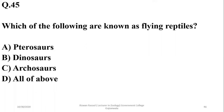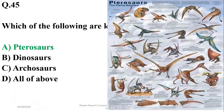Question forty-four: which of the following are known as flying reptiles? The ancient group of pterosaurs are known as flying reptiles, with a huge variety known from fossil evidence. The correct option is alpha.